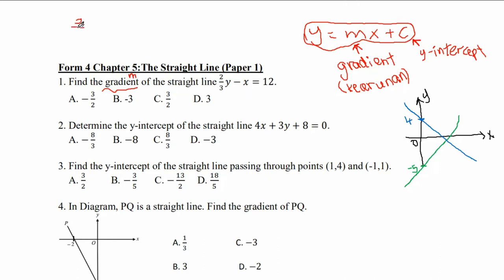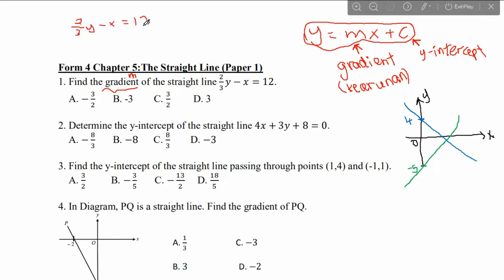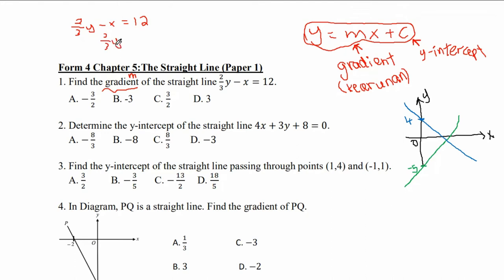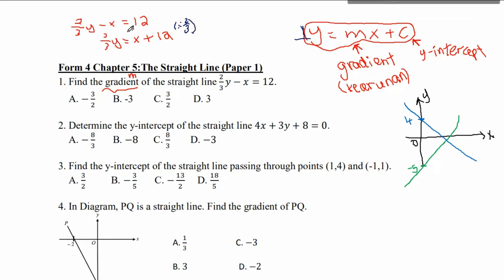We rearrange the equation: 2 over 3 y minus x equals to 12. We bring this negative x to the right-hand side, so 2 over 3 y equals to x plus 12. The general equation of the straight line requires the coefficient of y to be 1 — you cannot have any numbers, it must be 1. Here we have 2 over 3, so we have to get rid of it by dividing by 2 over 3. The right-hand side is also divided by 2 over 3.